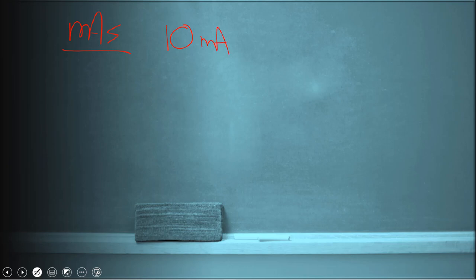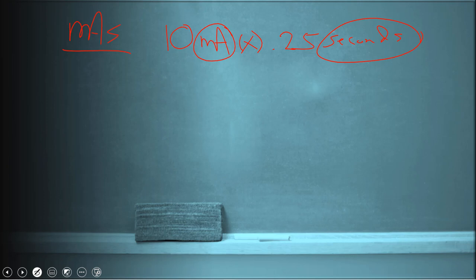Let's work through mAs on a chalkboard example. For a standard mAs unit: if you have 10 mA and multiply by 0.25 seconds, that equals 2.5 mAs. Seconds times mA equals mAs — it's that simple. Some settings use fractions for seconds, so you'd perform the same calculation. Ideally you'll have a decimal reading on your x-ray unit to calculate this easily.